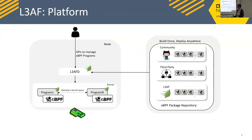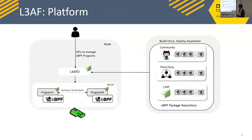This is how our platform looks. LEAF daemon is an orchestrating layer that runs on the node and chains multiple eBPF programs as shown in the diagram. It accesses an API to add, remove, or modify configurations. We also have an eBPF package repository where programs are stored — community-driven, vendor, or third-party programs can be downloaded, loaded on the node, and managed by LEAF.